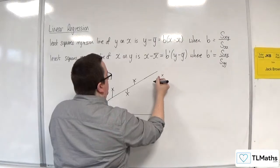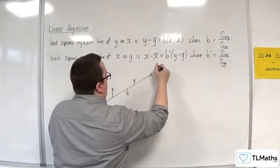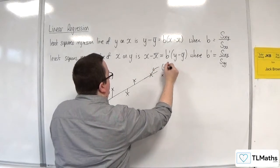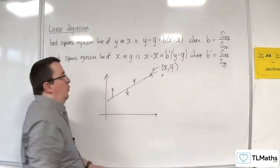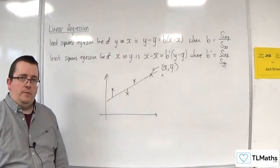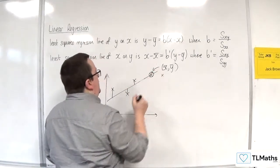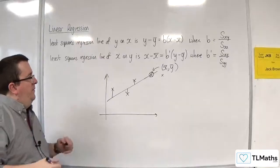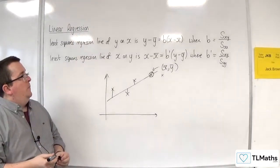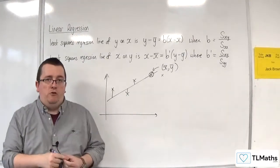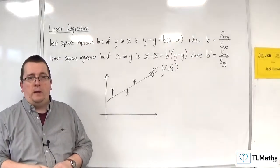If we had a few more points over here, for example, the regression line will always go through the mean point. You might be wondering where has that calculation come from.